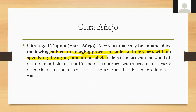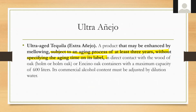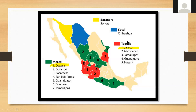That's tequila as a whole. Now we're going to talk about mezcal. You can see the different production areas for all the agave spirits — up in Chihuahua you'll find sotol, in Sonora you'll find bacanora. Tequila production is in Jalisco, Michoacán, Tamaulipas, Guanajuato, and Nayarit. Guanajuato and Tamaulipas overlap with mezcal production regions as well. Really, Oaxaca is the main region for mezcal production.